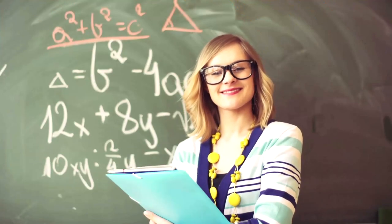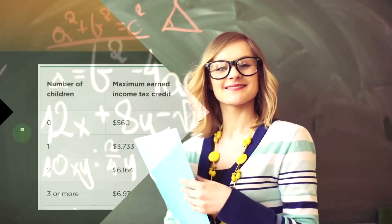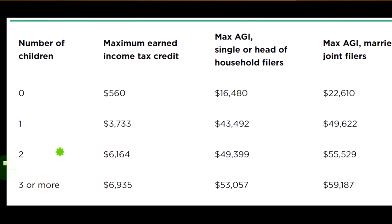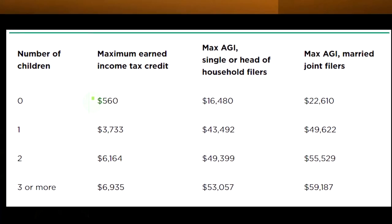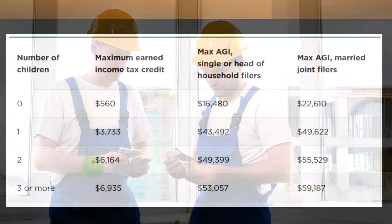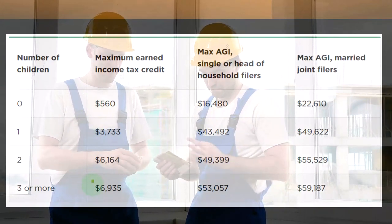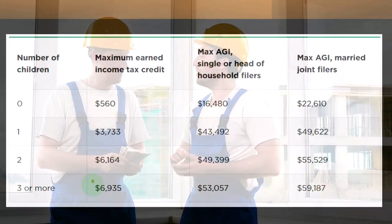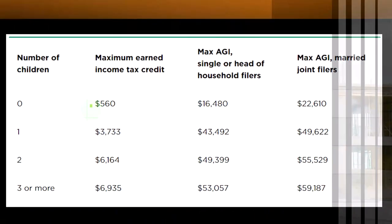The credit should ideally help people become self-sufficient, which is what it tries to do — but you can see how complicated it makes things. Looking at a common table, it shows the number of children on the left, with a different credit curve per number of children. The maximum earned income tax credit for zero children is much lower than for three children — $560 versus $6,935, which is a quite substantial difference.